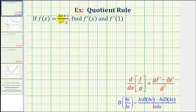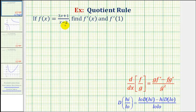If f of x equals the quantity three x plus one, divided by the quantity x minus two, we want to find f prime of x, the derivative function, and f prime of one. Because our function is a quotient, we'll have to apply the quotient rule in order to find our derivative function.